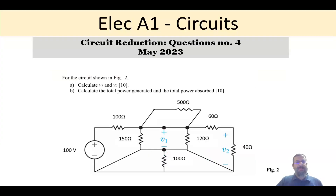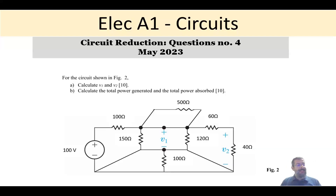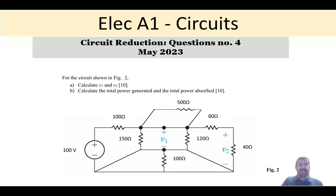Hi everyone and welcome to this series of BO exam Electrical A1 about circuits. This question is from May 2023, after the pandemic. This question is a category I call circuit reduction — they give you a big circuit and expect you to reduce it to something manageable. Once you follow certain techniques, you'll see the circuit becomes much simpler than it looks.